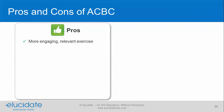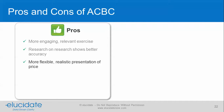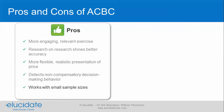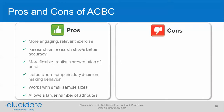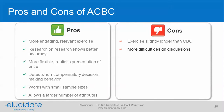So what are the pros and cons of ACBC? It's a more engaging, relevant exercise. Research on the research shows better model accuracy. It's a more flexible, realistic presentation of price, detects non-compensatory decision-making behavior, and it works well with small sample sizes. It also allows us to do studies on a larger number of attributes. If there are any cons, it's that the exercise is slightly longer than CBC — but really just a few minutes — and there are more difficult design discussions, but as long as you work with a vendor who's done a number of ACBCs, this should go pretty smoothly.